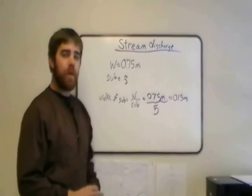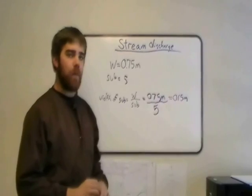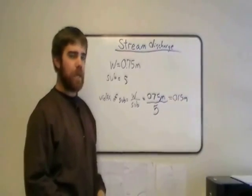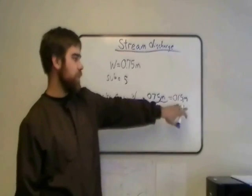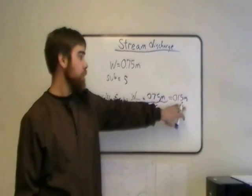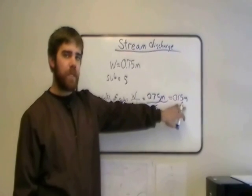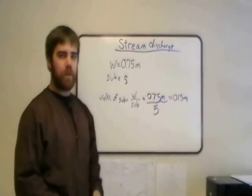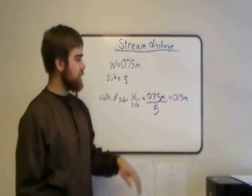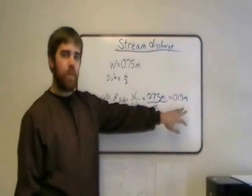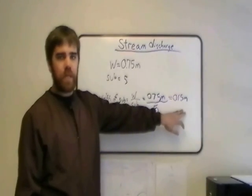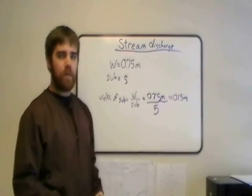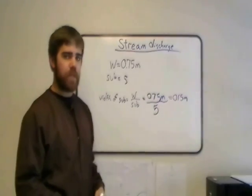Since we want to measure the flow in the middle of each subsection, we need to figure out the midpoint of the first subsection. To do this, we take the subsection width and divide it by two: 0.15 divided by 2 equals 0.075 meters, or 7.5 centimeters. We can now go into the field and measure the first velocity at 0.075 meters from the shore, along with the depth, to get the discharge for that first area.